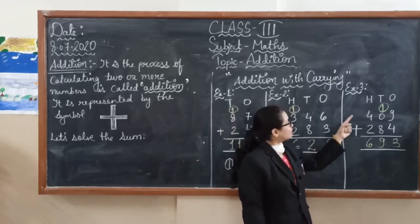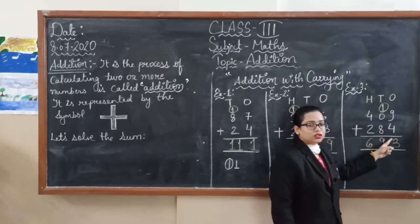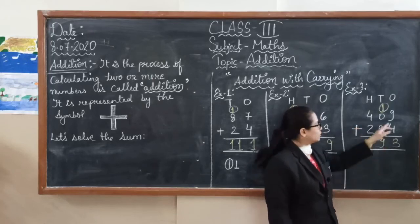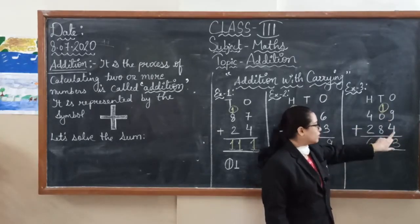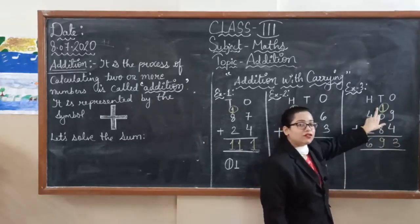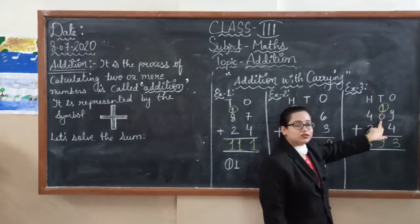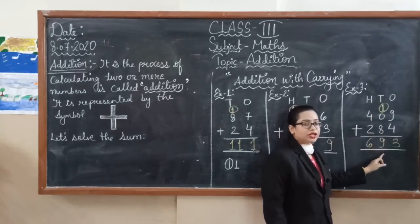Our example three is four hundred and nine and two hundred and eighty-four. Always we will start addition from the one's place. Nine plus four is thirteen. So three will go below, and one is our carry one. One will be written on the ten's place. One plus zero is one. One plus eight is nine. So here we can write nine.